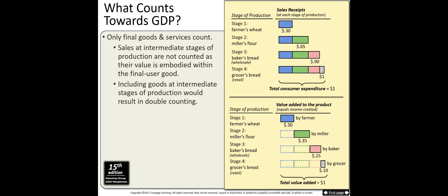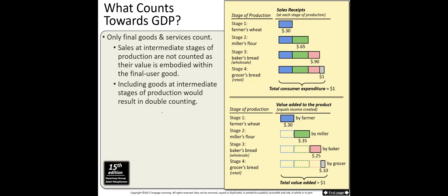In GDP, when you look at the definition, only final goods and services count. Sales at intermediate stages of production are not counted, as their value is embodied within the final user good. For example, when you buy a latte from Starbucks, Starbucks purchases milk from the store, so milk has a purchase price. But the purchase price of the milk is already included in the latte — when you pay five dollars for the latte, you are actually paying for the milk included in it as well.